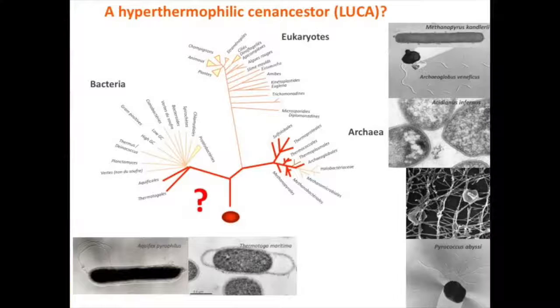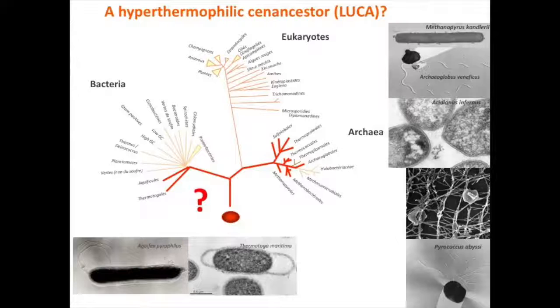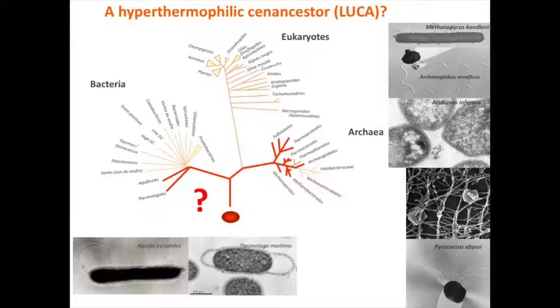However, the question of the thermophilic nature of the last common ancestor has been a matter of debate. When people explored more microbial diversity and built better phylogenetic trees including protein-coding genes, they realized that in bacteria, neither Aquificales nor Thermotogales were necessarily placed early in bacterial trees. The basal position of these two lineages was questioned, because in bacteria we observe a radiation of organisms where it's difficult to say which comes before another.